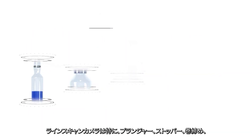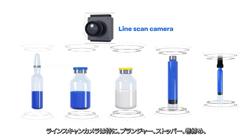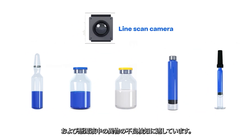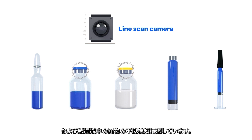Line scan cameras are particularly suitable for inspecting plunger, stopper or crimp defects, or for detecting particles and suspensions.